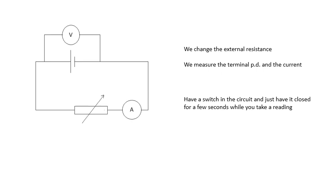We're changing the resistance, we're measuring V and I. Have a switch in the circuit and just have it closed for a couple of seconds, long enough to take a reading. If you don't do that, we might be drawing about an amp from this little cell.